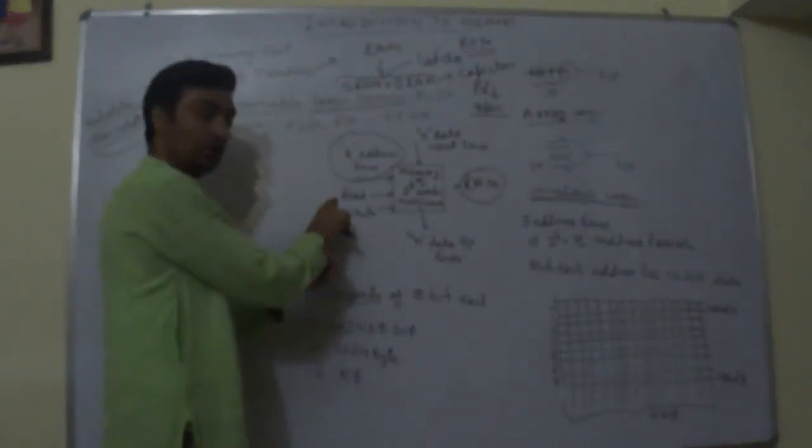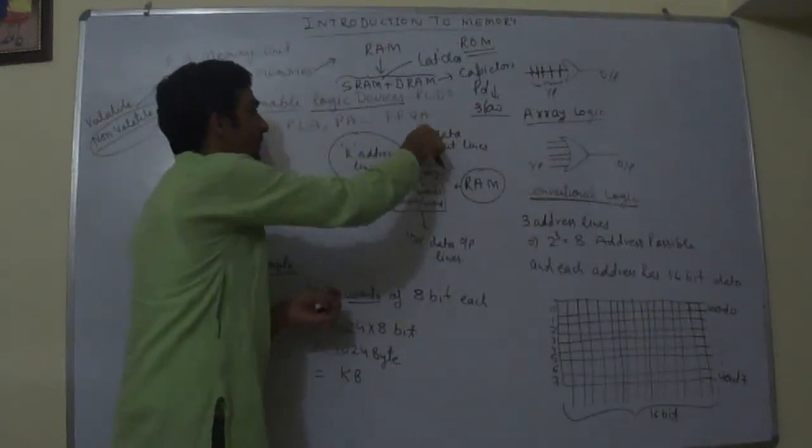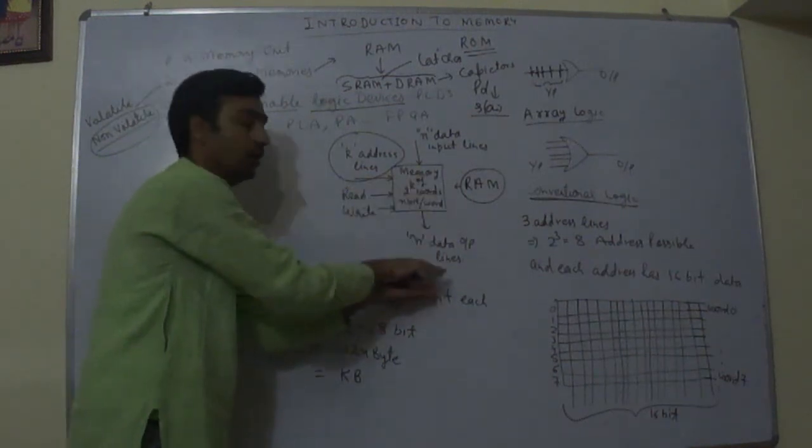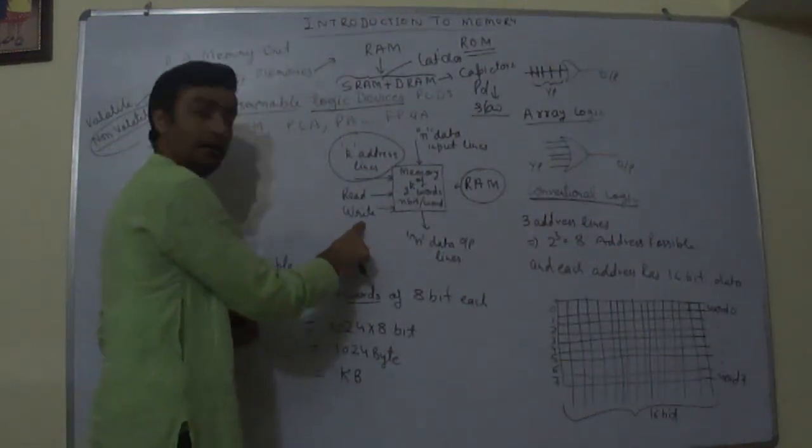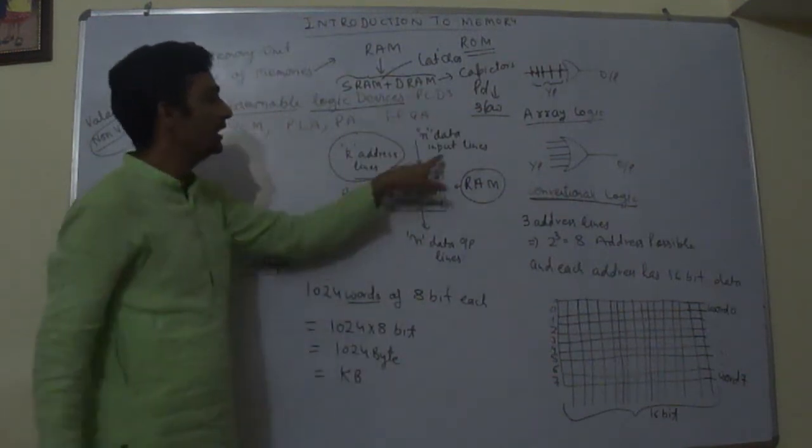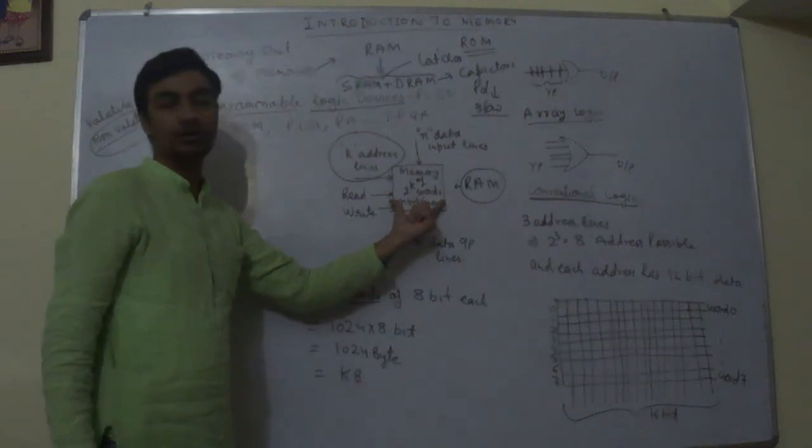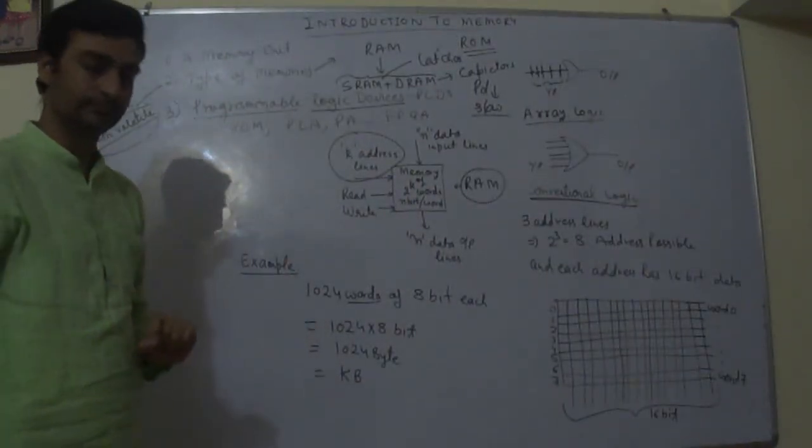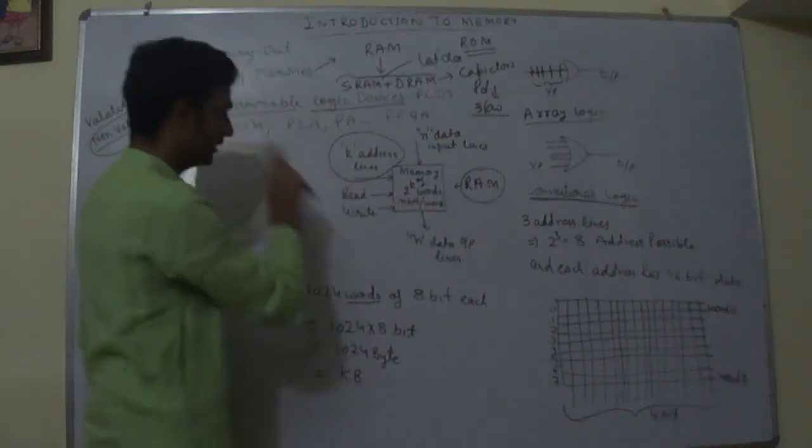So whenever read operation is going on, data will not be inputted into the memory; data will be taken from the memory. Whenever write is active high, then n data input line will be putting data onto the memory locations or writing data onto the memory locations. So this is block diagram of RAM.